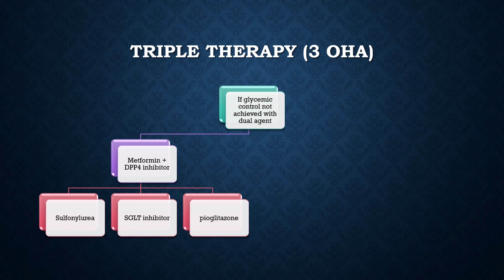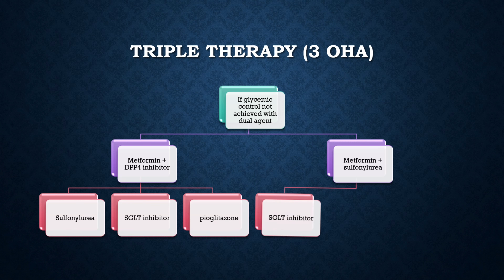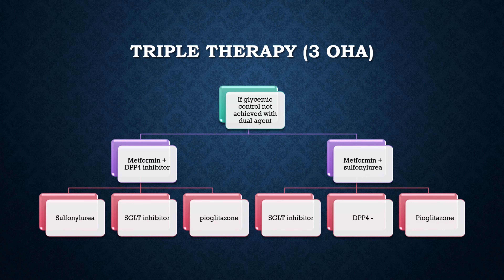SGLT-2 inhibitors are weight neutral. If the patient is already on metformin plus sulfonylurea — metformin plus glimepiride, glipizide, or gliclazide — you can add an SGLT-2 inhibitor, DPP-4 inhibitor, or pioglitazone. The advantage of DPP-4 inhibitors is that they are weight neutral and safe for renal and cardiac patients. This covers triple therapy OHA.